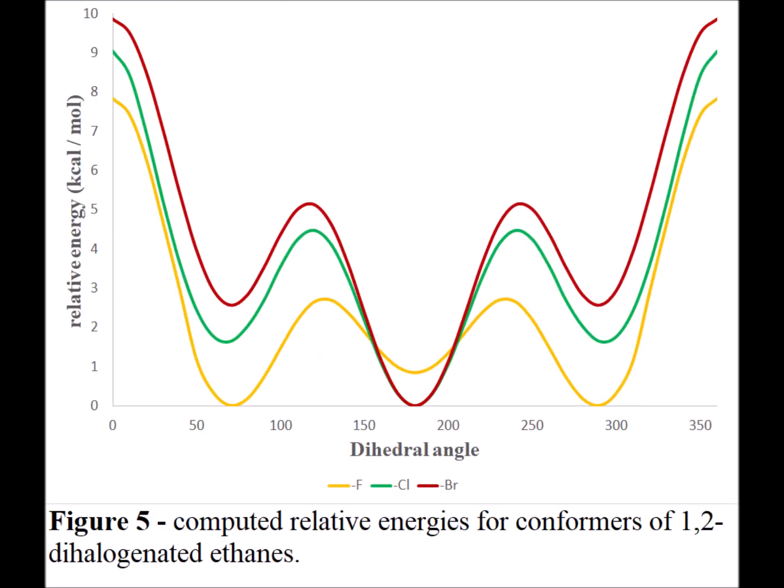Figure 5 is a summary of the conformational energies for all three of the 1,2-dihalogenated ethanes, showing the relative maxima and minima. We notice that relative to ethane or the monosubstituted ones, the rotational barriers are now much larger — not just 2.5 or 3 kcal per mole, but as large as 10 kcal per mole. Thank you very much for your kind attention. Stay safe, stay healthy, and have a good one.